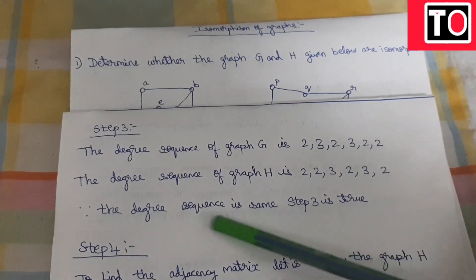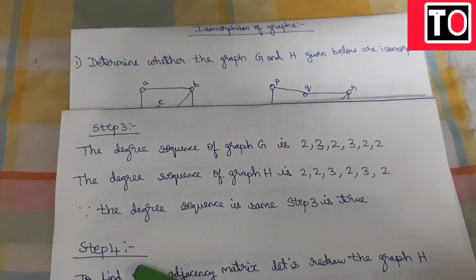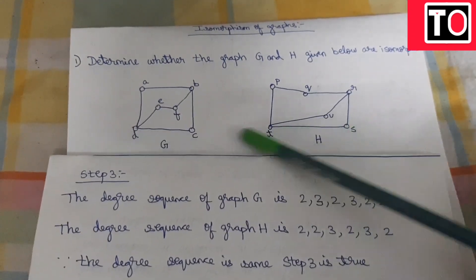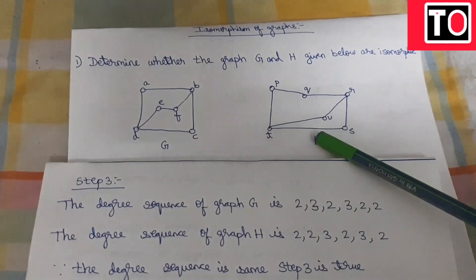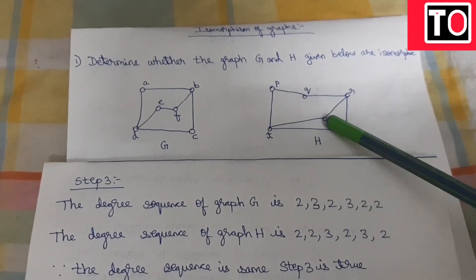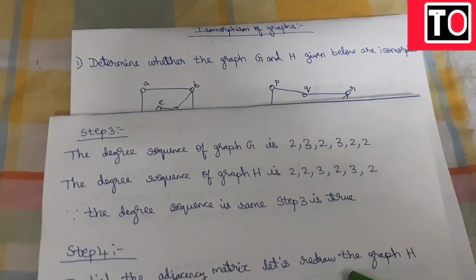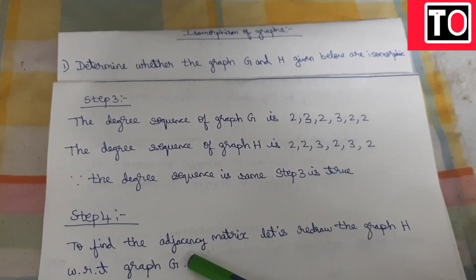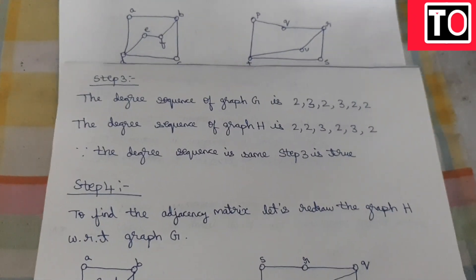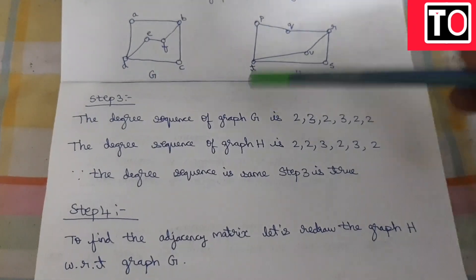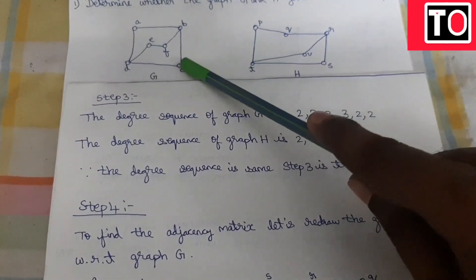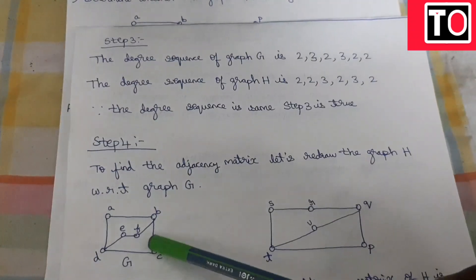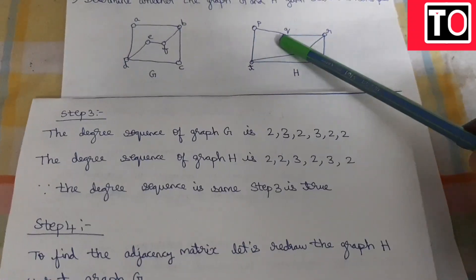Step 4 is the Adjacency Matrix. To find the adjacency matrix, first we will redraw graph H with respect to graph G — that is, a redraw of H-graph with respect to G-graph. You have two graphs and you will find the same correspondence and redraw.